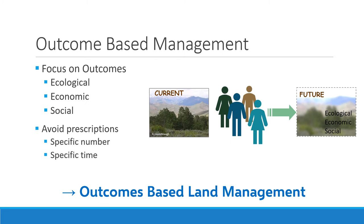The final approach is outcome-based land management. It represents a change in focus — historically management might have really only thought about ecological outcomes. Outcome-based land management ensures we're also thinking about economic outcomes, not just to the community but to individuals, and social outcomes — how grazing on specific land affects the community or family that lives there. This idea, often called the triple bottom line — ecological, economic, and social — all needing to be part of decision-making — is outcome-based land management.